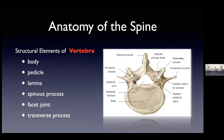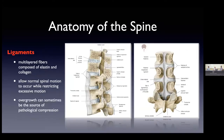Another important part of vertebral anatomy is the facet joint. We know that bones articulate with one another via joints — the knee joint, the hip joint. On the spine, we call that the facet joint. The ligaments of the spine are structures composed of elastin and collagen — molecules that provide flexibility — and they attach bone to bone. These structures allow the spine to undergo normal physiologic motion, and their purpose is really protective.